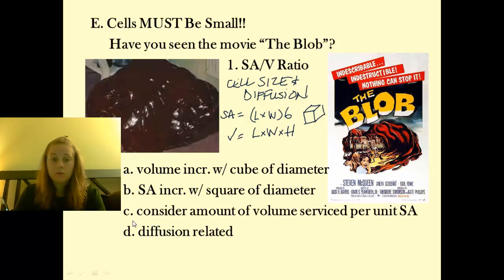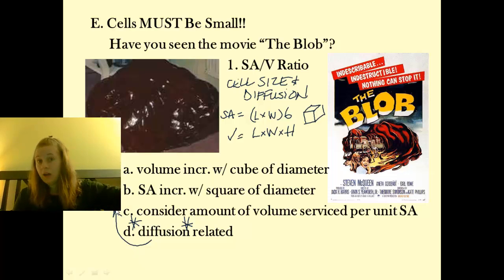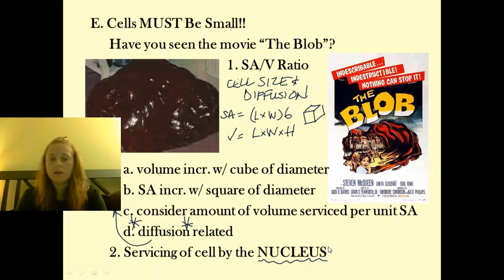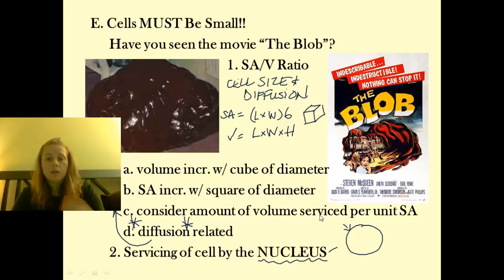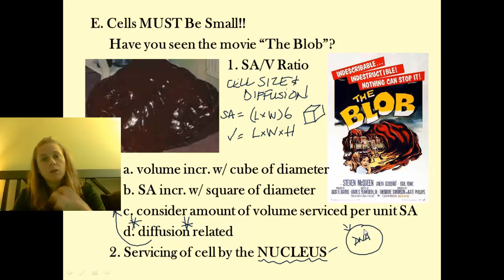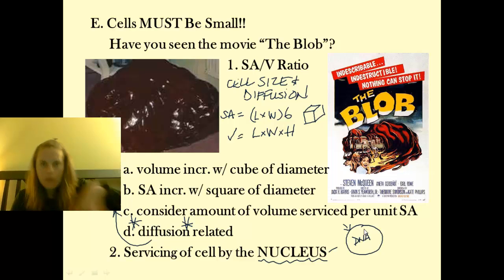This is heavily diffusion related — diffusion being the movement of materials from an area of high concentration to low concentration. Control of the cell in a eukaryotic cell is handled by the nucleus. This is a membrane-bound structure — basically a membrane-bound vesicle with a lipid bilayer. It's porous, so it has little holes throughout, and it's filled with DNA. This is where the DNA lives in a eukaryotic cell, completely separate from other cell structures, versus a prokaryote where DNA just floats around.